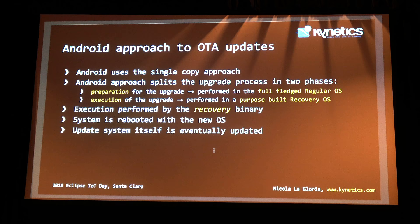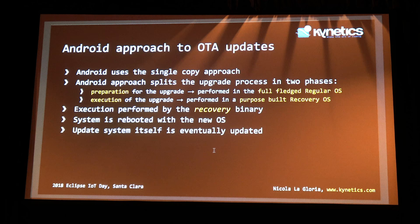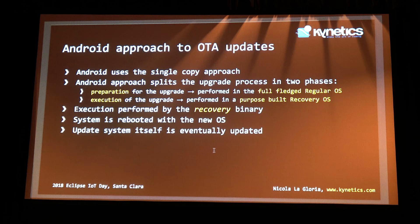We liked the way Android manages updates and wanted to apply the same process to Linux as well. Android uses a single copy approach and splits the upgrade into two phases: preparation, where you collect everything needed from the regular OS, and execution, where you go into recovery mode, write the changes, and reboot with the new OS. You may also update the recovery system itself at the end, leaving you with a fully running OS.